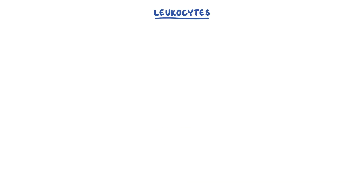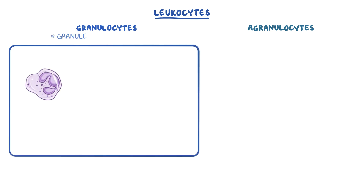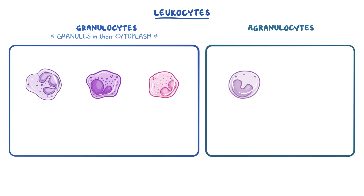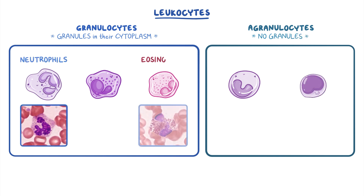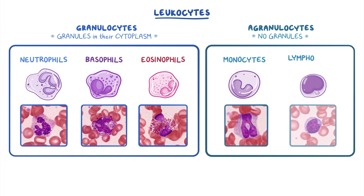Leukocytes in the blood can be classified into two groups: granulocytes and agranulocytes. The two groups can be differentiated using light microscopy since the granulocytes have prominent granules that look like small dots or grains in their cytoplasm, whereas agranulocytes don't have these granules. Neutrophils, eosinophils, and basophils are classified as granulocytes, and both monocytes and lymphocytes are classified as agranulocytes. Lymphocytes can then be further subdivided into B cells and T cells.